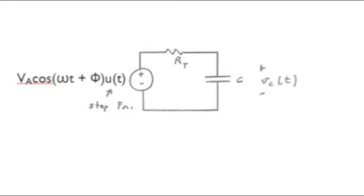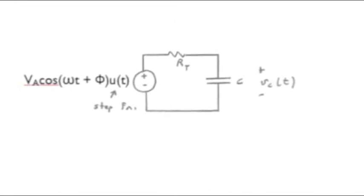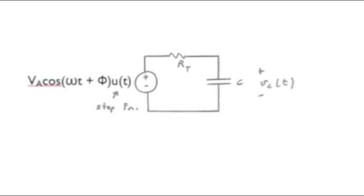In that case, we may show that an RC circuit consisting of a Thevenin resistor and a capacitor is connected to a voltage source of value V sub A times the quantity cosine omega T plus phi, phi being a phase angle, all multiplied by the step function U of T.